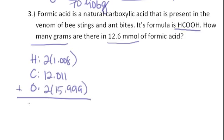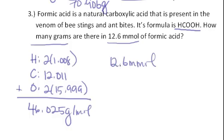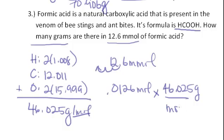We're starting with 12.6 millimoles. We need to be in moles because that's what molecular weight is, so you can just move the decimal over—that is 0.126 moles. Now we can multiply that by the molecular weight, and that turns out to be 0.58 grams of formic acid. And you're done.